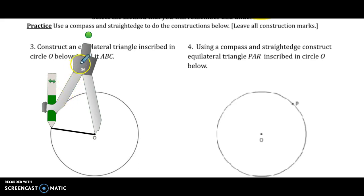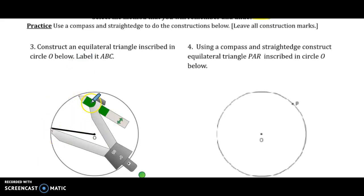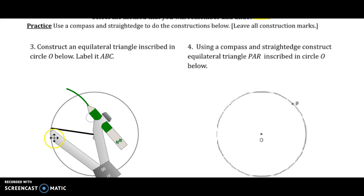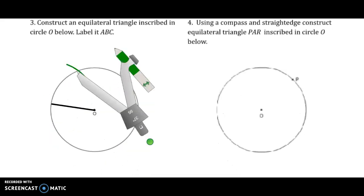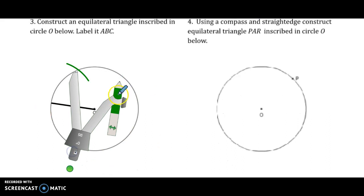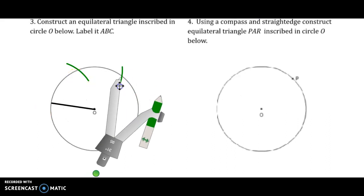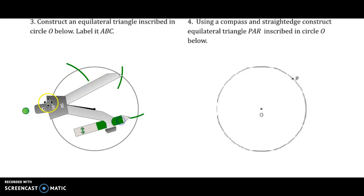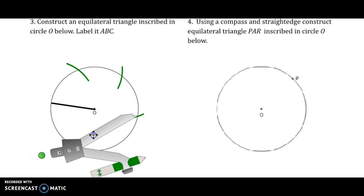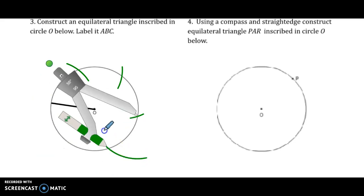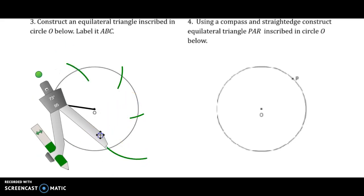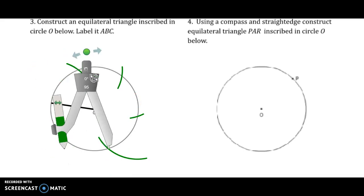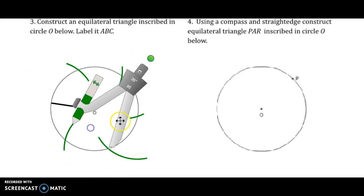For the hexagon method we are going to measure the radius, which I've already drawn. We're going to make an arc all along the circle that measures that radius, and we'll end up with six arcs. Much easier to do by hand than with this program.